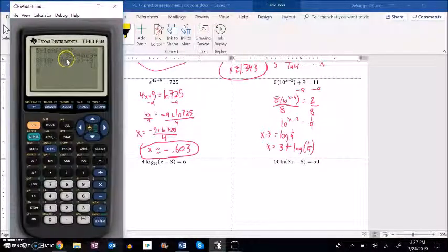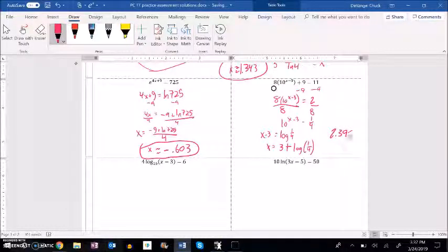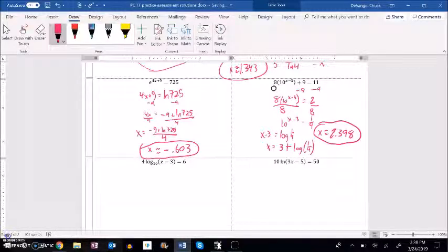Three decimal places. So 2.398. And there it is. Thank you.